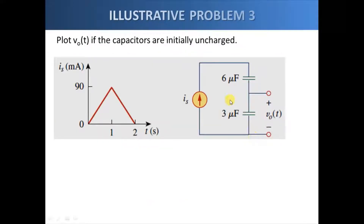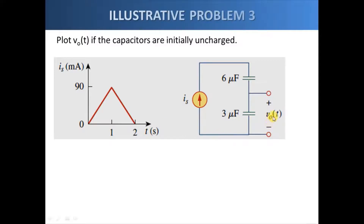In our third example, we have two capacitors — six microfarads and three microfarads — connected in series. The current flowing towards the series combination is defined by a given graph. We are asked to find the voltage across the three microfarad capacitor.